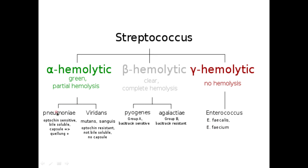To differentiate between streptococcus pneumoniae and streptococcus viridans, we use the bile solubility test. Strep pneumoniae is bile soluble while strep viridans is not bile soluble. Strep pneumoniae is optochin sensitive while strep viridans is optochin resistant, and strep pneumoniae has a capsule — to detect that capsule it gives a quellung reaction which is positive.